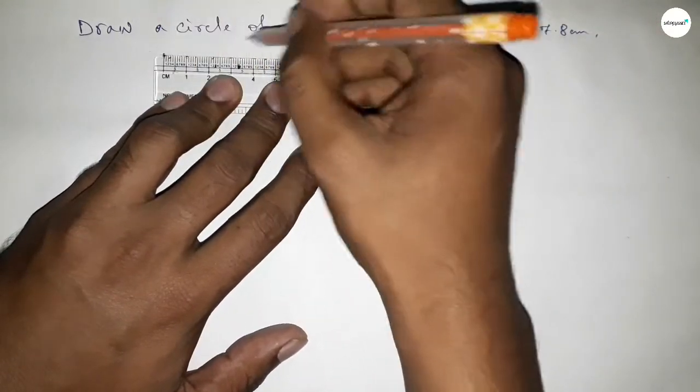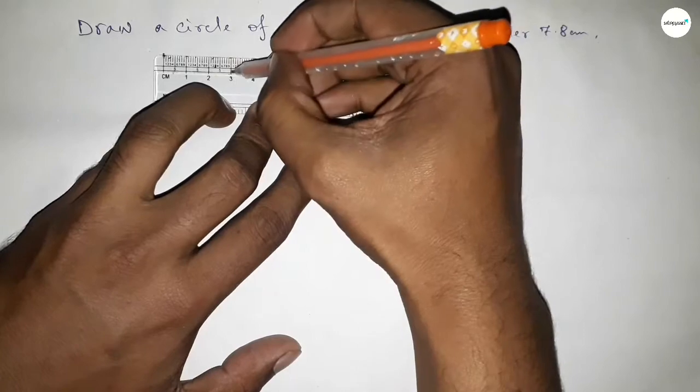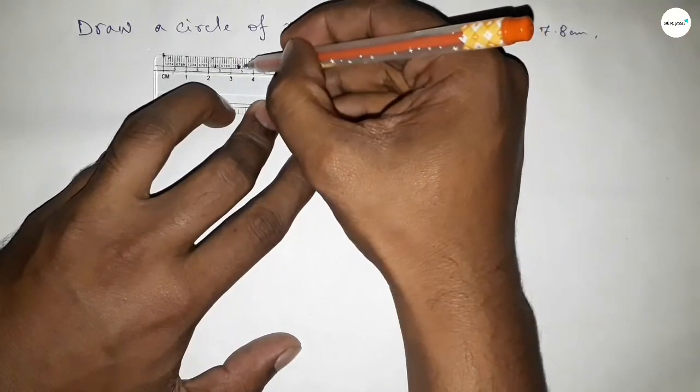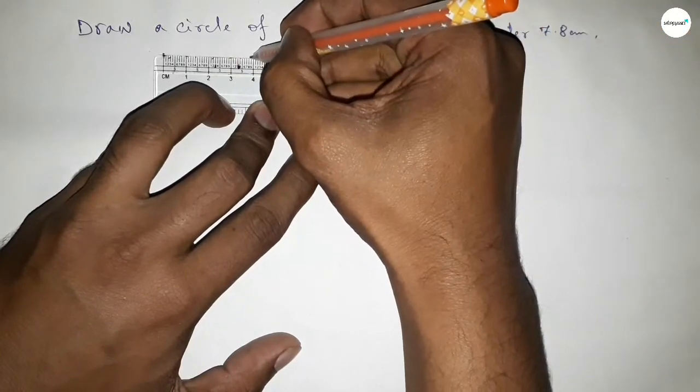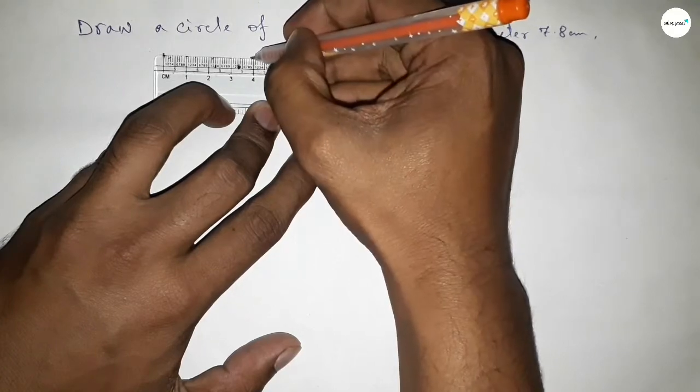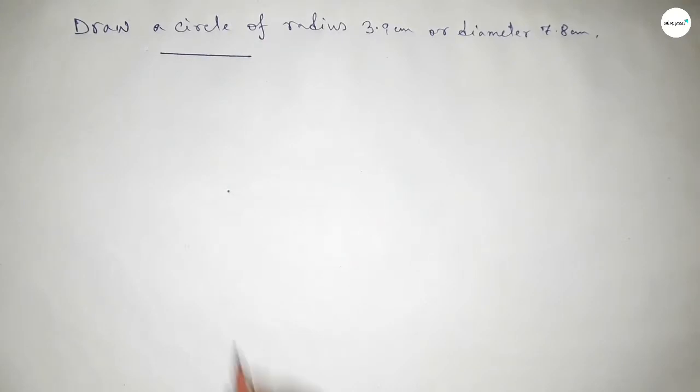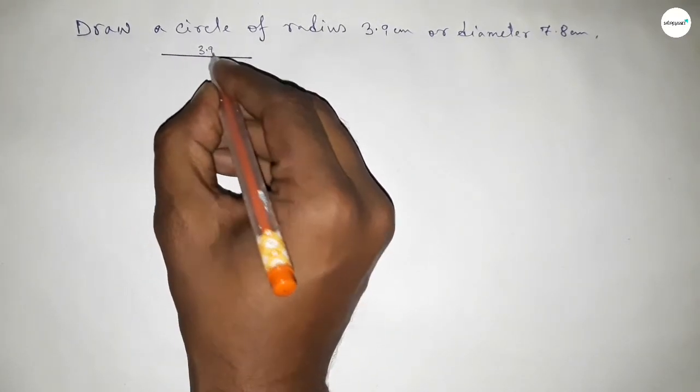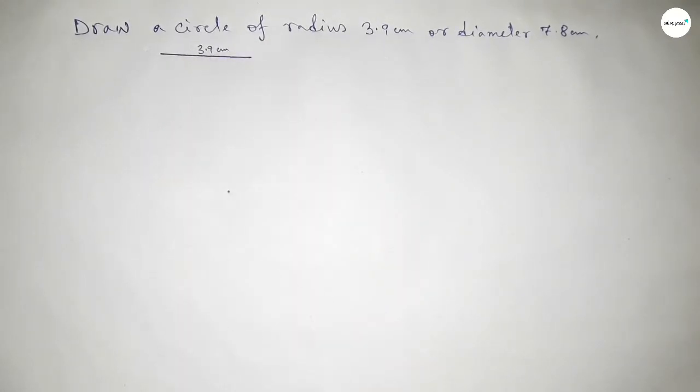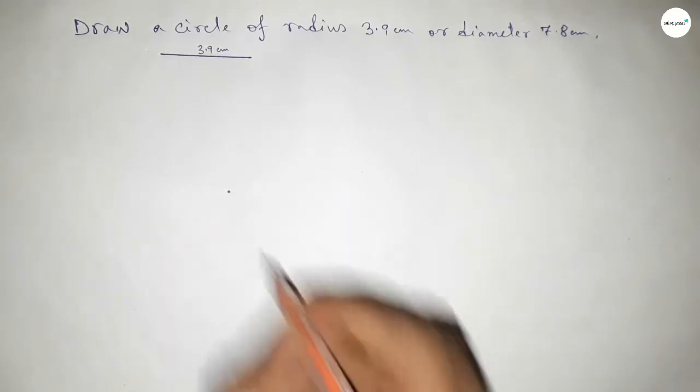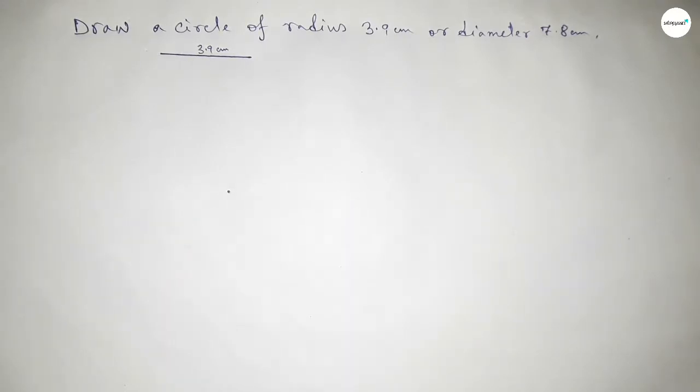So this is starting 0, 1, 2, 3, and this is 3.5, 6, 7, 8, 9. We know that radius of a circle is half of diameter, so this is 3.9 centimeter. Now taking here a point.